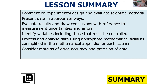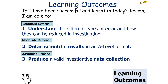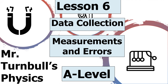So what have we looked at in today's lesson? Hopefully we can comment on experimental design and evaluate scientific methods, present data in appropriate ways, evaluate results and draw conclusions with reference to measurement uncertainties and errors, identify variables that must be controlled, and process and analyse data using appropriate mathematical skills considering margins of error, accuracy and precision. We should be able to understand the different types of error and how they can be reduced, present scientific results in an A-level format, and produce a valid investigative data collection. Thank you very much and have a lovely day.